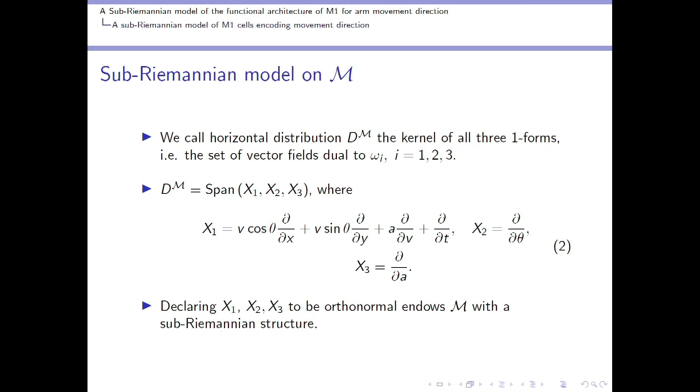What turned out was that this horizontal distribution is spanned by three vector field generators, called X1, X2, X3, that mainly prescribe the changes in time, in the movement direction, and in the acceleration variables. And declaring these three vector fields to be orthonormal endows our parameter space with a sub-Riemannian structure.